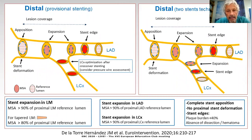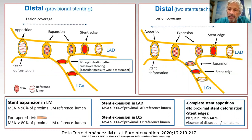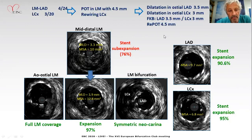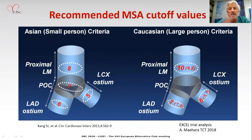For provisional stent in the distal left main or two-stent techniques in the distal left main, we also propose different targets: more than 80% of proximal reference lumen for the minimum stent area in the left main, downgrading to 80% the threshold in those left mains that are tapered, really decreasing in size due to the bifurcation. For the expansion in the ostium of LAD and circumflex, the stent should be more than 90% of the reference lumen, and again the apposition, deformation, and stent edges are very well evaluated. In this complex case, the left main showed an intermediate step with 76% expansion in the distal left main, which was enlarged afterwards to 97%, achieving full left main coverage and more than 90% expansion in the left main, LAD, and circumflex.